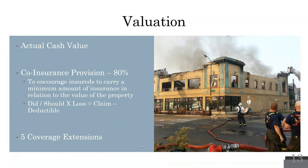Coinsurance is designed to encourage insureds to carry a minimum amount of insurance in relationship to the value of the property. The coinsurance equation: the amount of insurance you did have, divided by what you should have had (per the insurance company), times the loss, equals the claim — minus any possible deductible. Simplified: did divided by should, times the loss, minus the deductible.